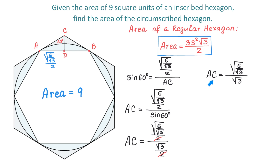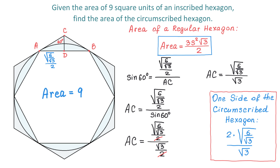Since this expression represents AC, to find the side of the circumscribed hexagon we need to double it. So one side of the circumscribed hexagon is 2 times square root of 6 over square root of 3, all over square root of 3. Now that we know one side, we will use the area formula one more time to find the area of the circumscribed hexagon.